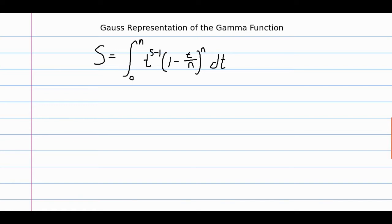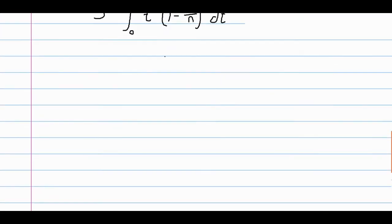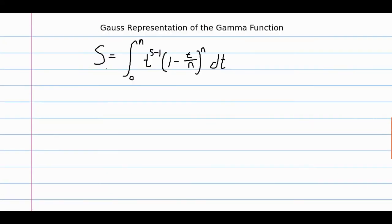Consider the integral that we'll denote by the capital letter S — the integral from 0 to n of t to the s minus 1 times 1 minus t over n to the nth power, dt. This integral looks an awful lot like the gamma function, and in fact, if we were to take the limit as n goes to infinity, we would get gamma of s, because this limit is just e to the negative t, and then our bound would go to infinity as well.